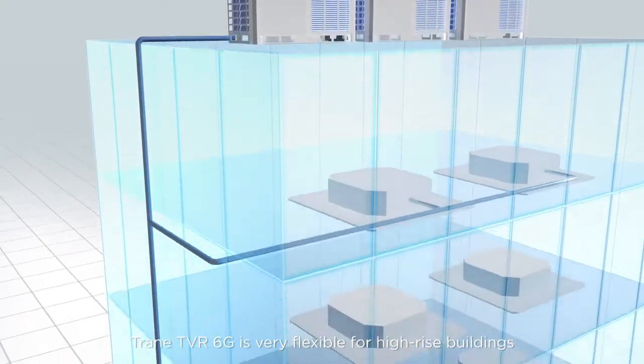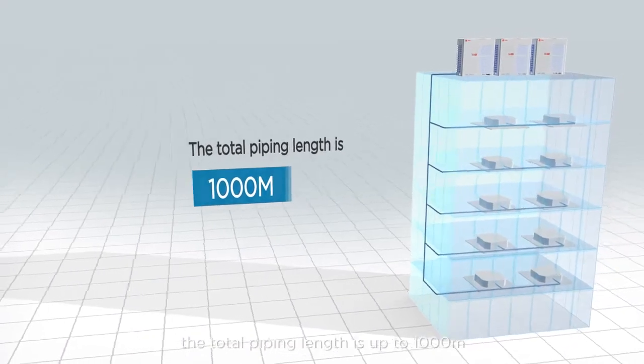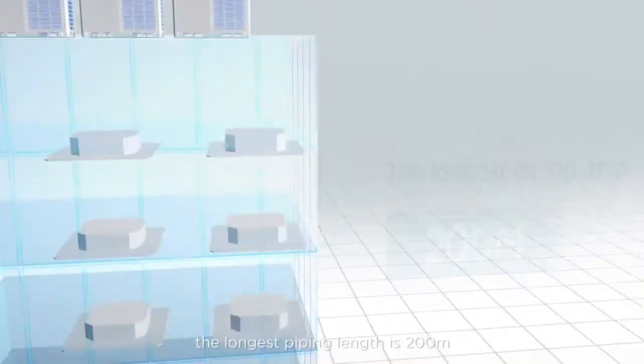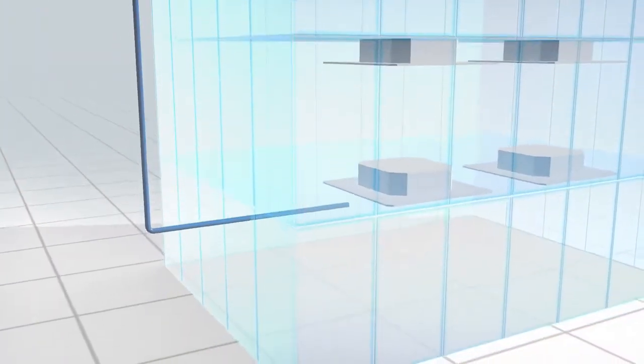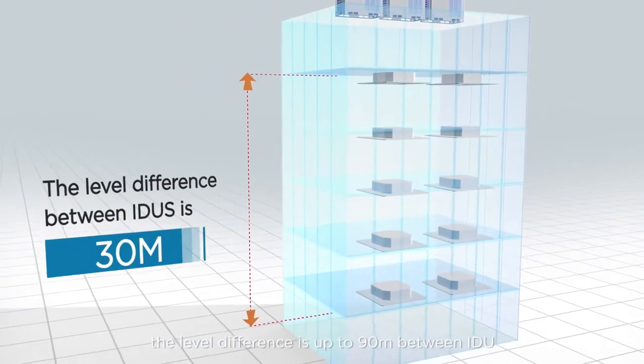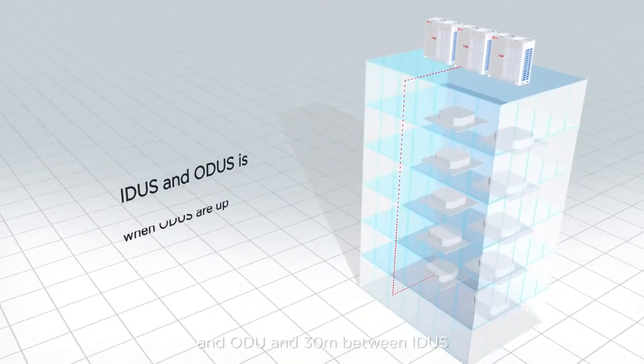TrainTVR 6G is very flexible for high-rise buildings. The total piping length is up to 1,000 meters. The longest piping length is 200 meters. The level difference is up to 90 meters between IDU and ODU and 30 meters between IDUs.